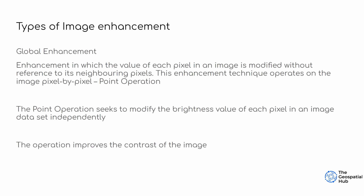The first type of enhancement is global enhancement. Each pixel in the image is modified without reference to its neighbors. An image is made up of many pixels arranged in grids or cells side by side. For global enhancement, each pixel is modified by a point operation — the digital numbers of the pixels are modified without referencing neighboring pixels.